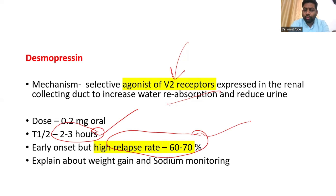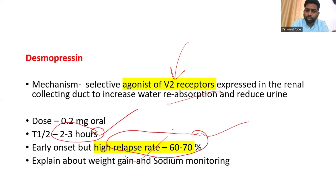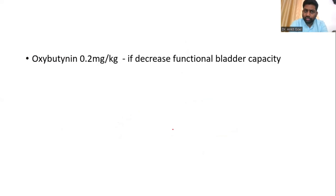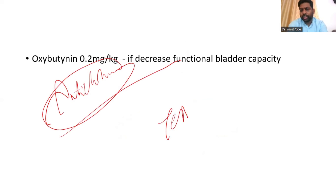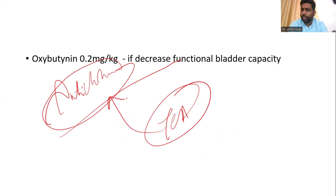The problem with desmopressin is a high relapse rate of 60 to 70 percent. You must counsel the mother about weight gain — this is due to fluid retention from increased reabsorption, it is temporary, and you need to monitor sodium levels. If the bladder capacity is reduced, you can add oxybutynin at 0.2 mg/kg — this is an anticholinergic. Tricyclic antidepressants are used because of their anticholinergic property, but they are not the first choice in children; oxybutynin is preferred.